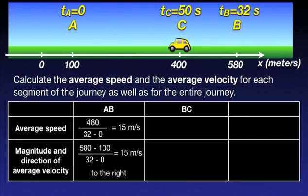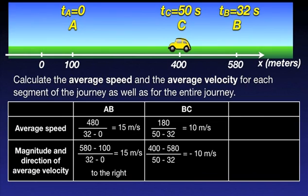Let's now move on to section BC. The distance travelled is 180 meters in 18 seconds, giving an average speed of 10 meters per second. The displacement is x final minus x initial, or 400 minus 580, which gives a displacement of minus 180 meters in 18 seconds. The average velocity is then minus 10 meters per second. The minus sign indicates that the velocity vector is in the opposite direction to our positive direction — meaning the car moves to the left. Here again, the magnitude of the average velocity equals the average speed.